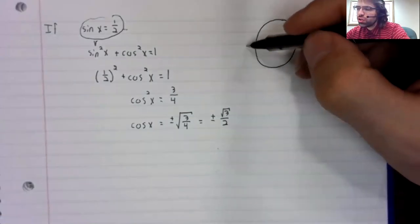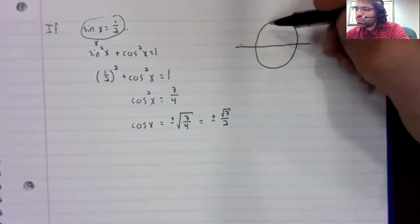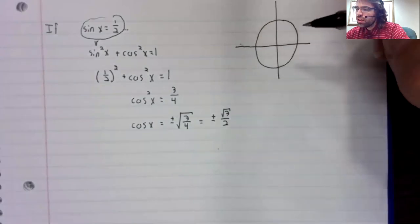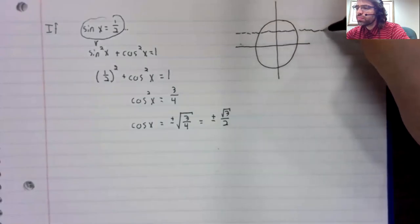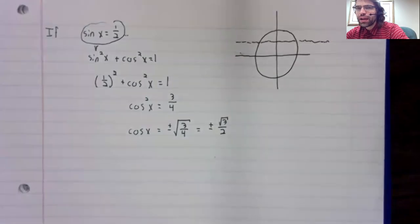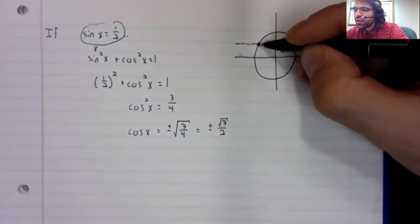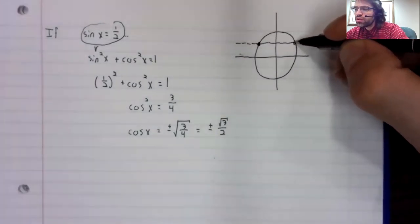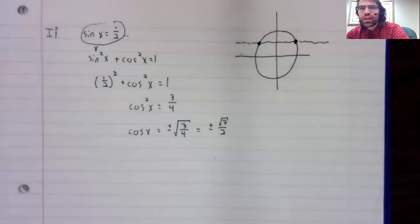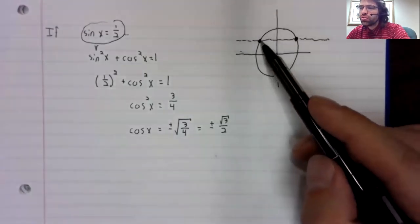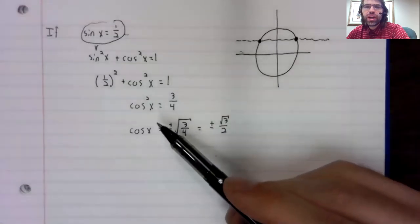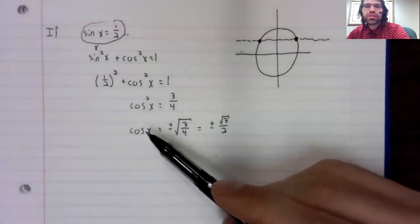Here's the unit circle. So if I tell you that the y coordinate is one half, there are two points with one half as their y coordinate. And of course, these two points have different x coordinates.